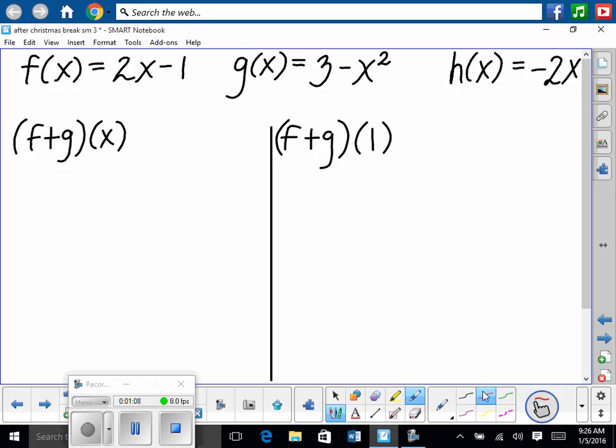Well, remember guys, we can just rewrite this. What this really means is just f(x) + g(x). Any questions on that? Okay, so that's pretty easy. What is f(x)? Well, it's 2x - 1. So we have 2x - 1, and then we're adding g(x). And g(x) is 3 - x².